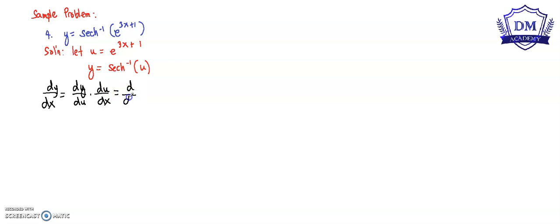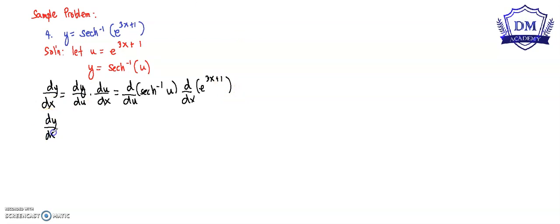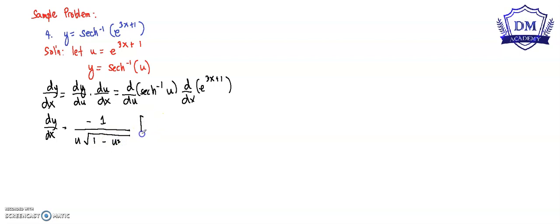This is equal to the derivative of y with respect to u — that is the inverse hyperbolic secant of u — multiplied by the derivative of u with respect to x, which is e raised to 3x plus 1. The derivative of inverse hyperbolic secant of u is negative 1 all over u times the square root of 1 minus u squared.